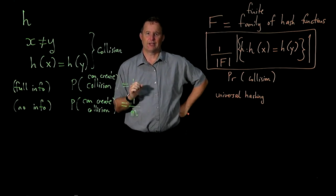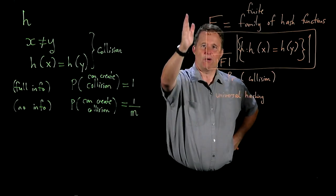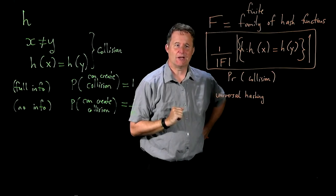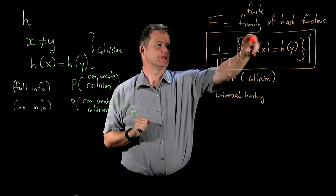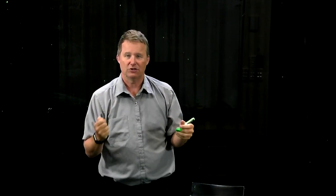Bad things can happen, but the user can't force them to happen — they can't really substantially increase the probability of them happening. What we want to do now is show an example that demonstrates this kind of thing is actually possible. For the purposes of analysis today, we're just going to assume that we're hashing integers. We might be hashing other data types, but let's assume we first convert them to some large integer in a unique way, and then hash down to the small values.